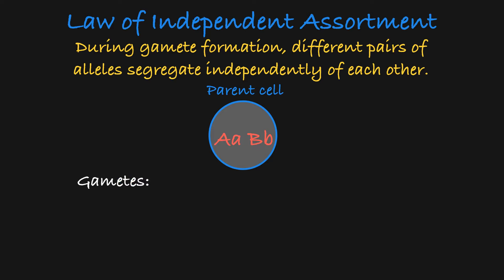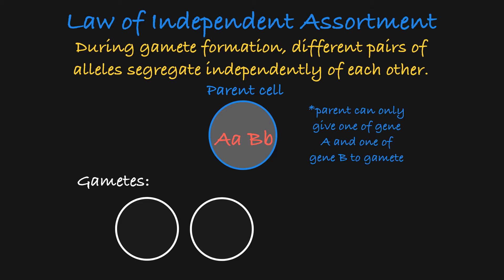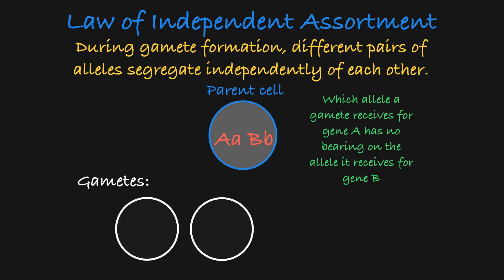When making gametes, the parent can only give one of the gene A alleles and one of the gene B alleles to the offspring. The crux of the Law of Independent Assortment is that which allele a gamete receives for gene A has no bearing on which allele that gamete receives for gene B. So if the gamete receives the dominant allele for gene A, the gamete is equally likely to receive the dominant or the recessive allele for gene B.